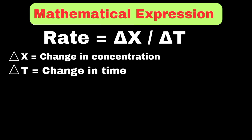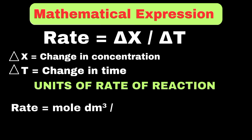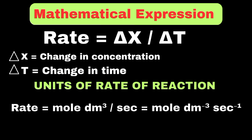From the formula of the rate of reaction, we can easily find out its units. Since concentration is expressed in moles per dm³, and the unit of time is seconds, the units for the rate of a chemical reaction will be moles per dm³ per second.